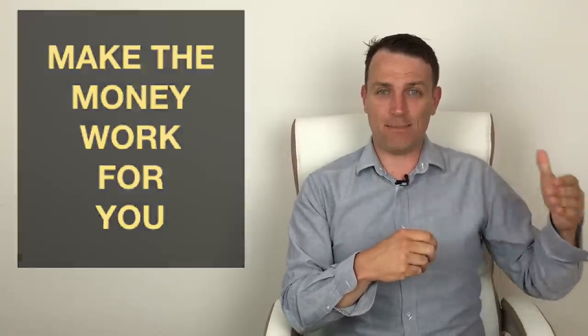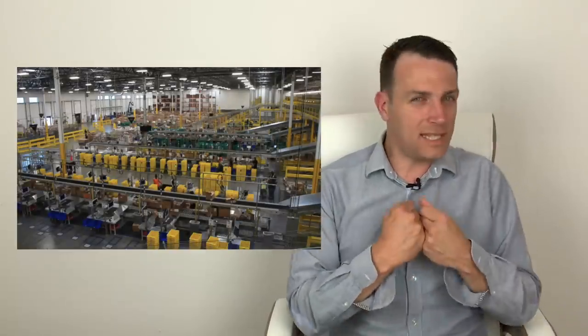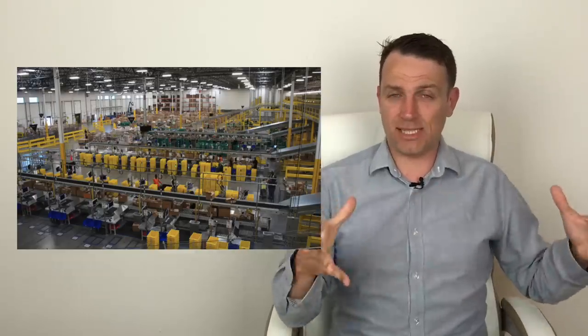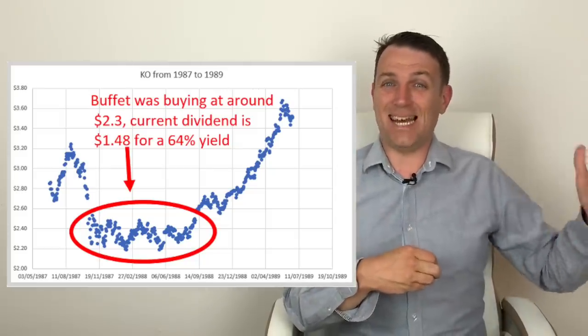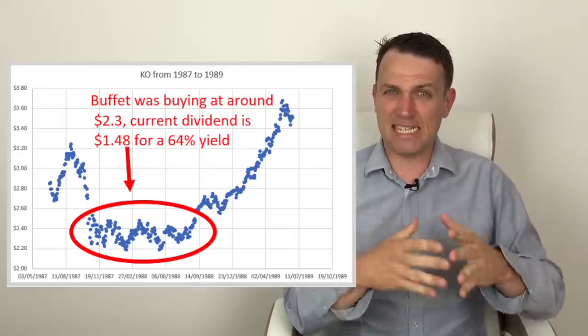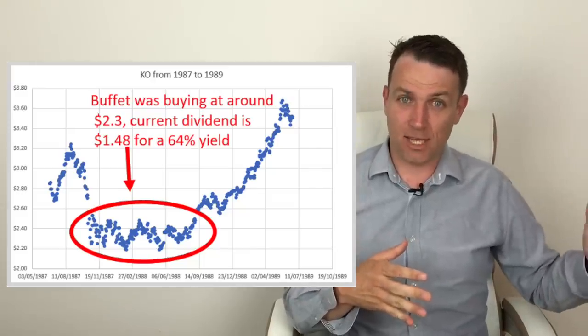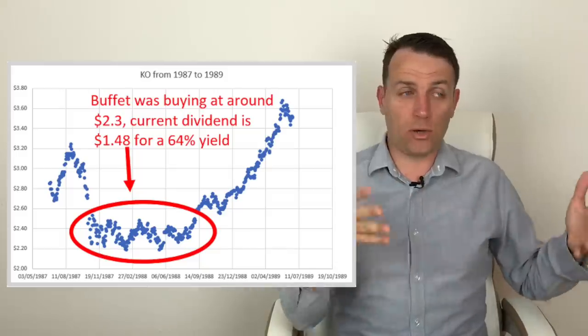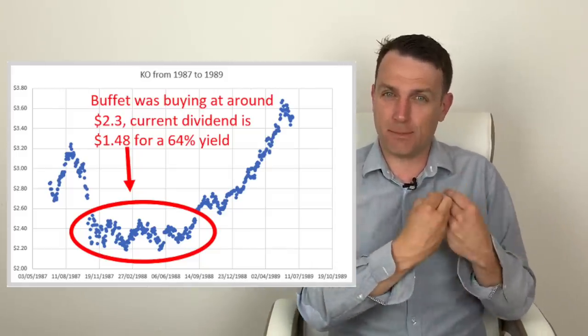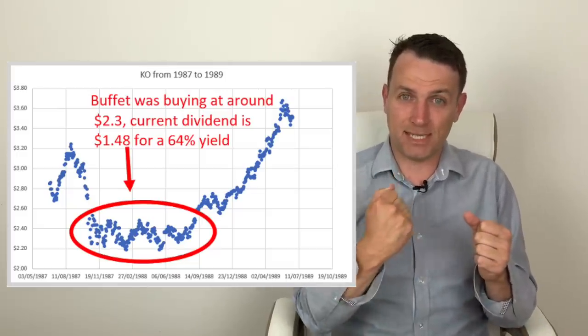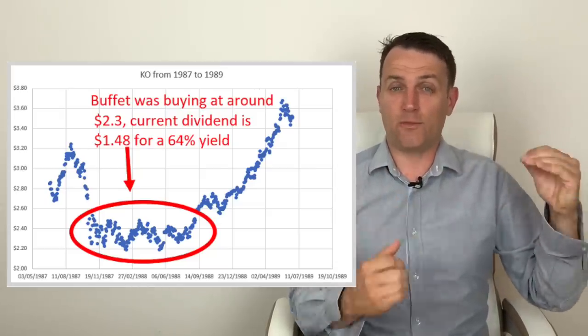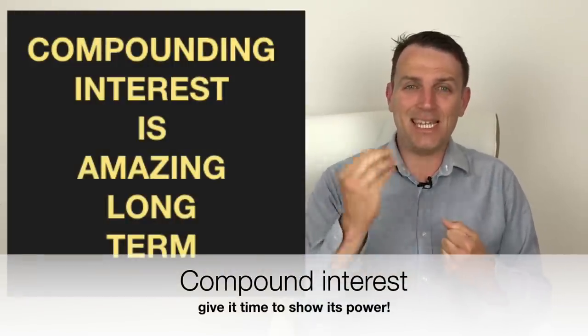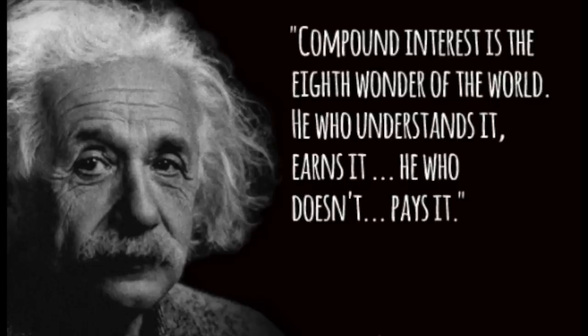For example, Amazon investors invested in Amazon in the last 15-20 years. What did they get in return? They got the best e-commerce ecosystem in the world that will give them dividends for the next 20 years. When Buffett invested in Coca-Cola in 1988, he now gets a 60% dividend yield on his initial investment. When you focus on the business and getting something back from the business, you will find it much easier to invest your money.